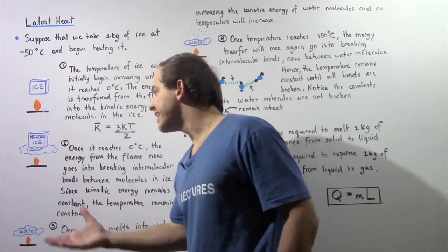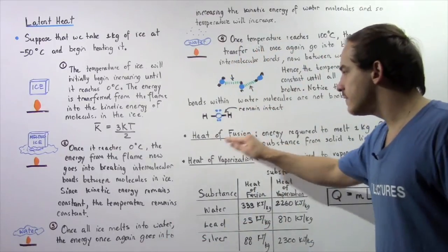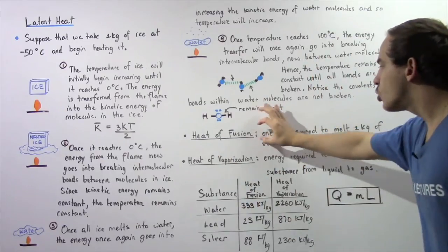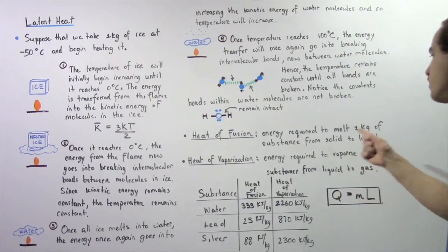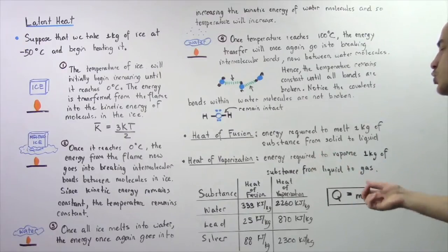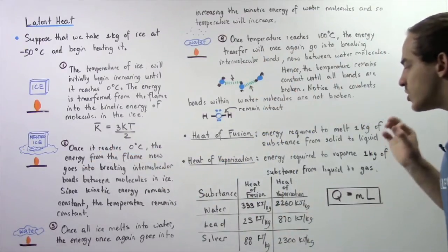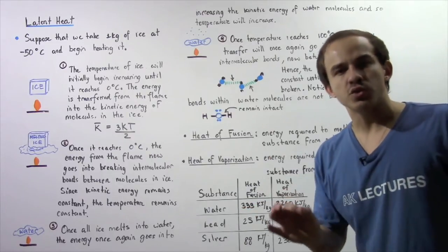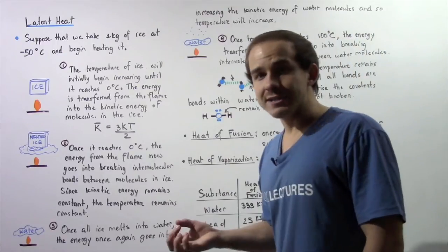Let's define something known as heat of fusion. Heat of fusion is simply the quantity of energy that is required to melt one kilogram of a substance from solid to liquid. For the case of water, we require 333 kilojoules of energy to melt a one kilogram block of ice.